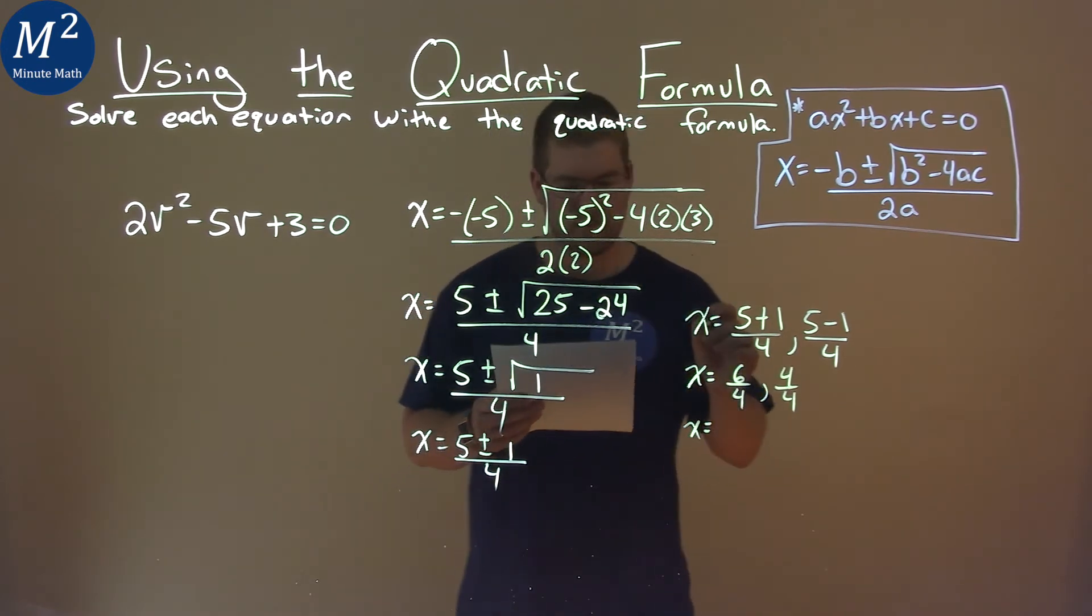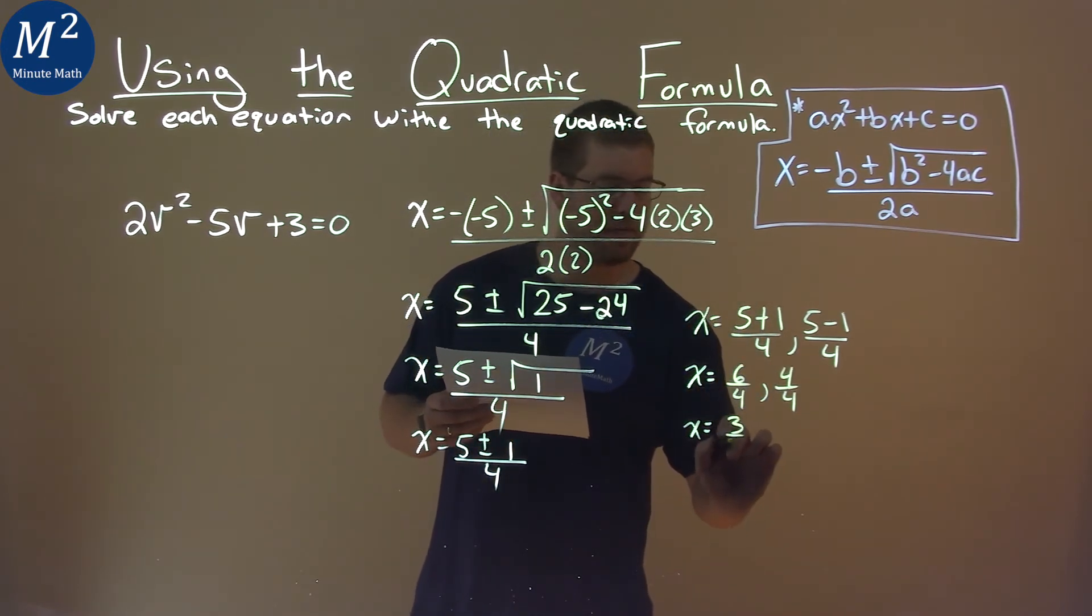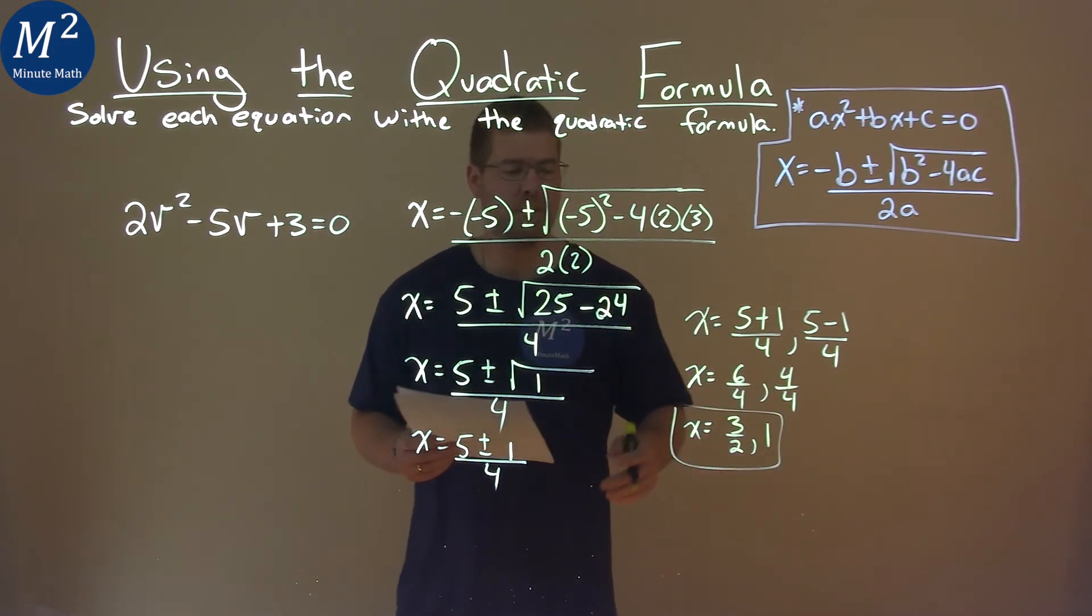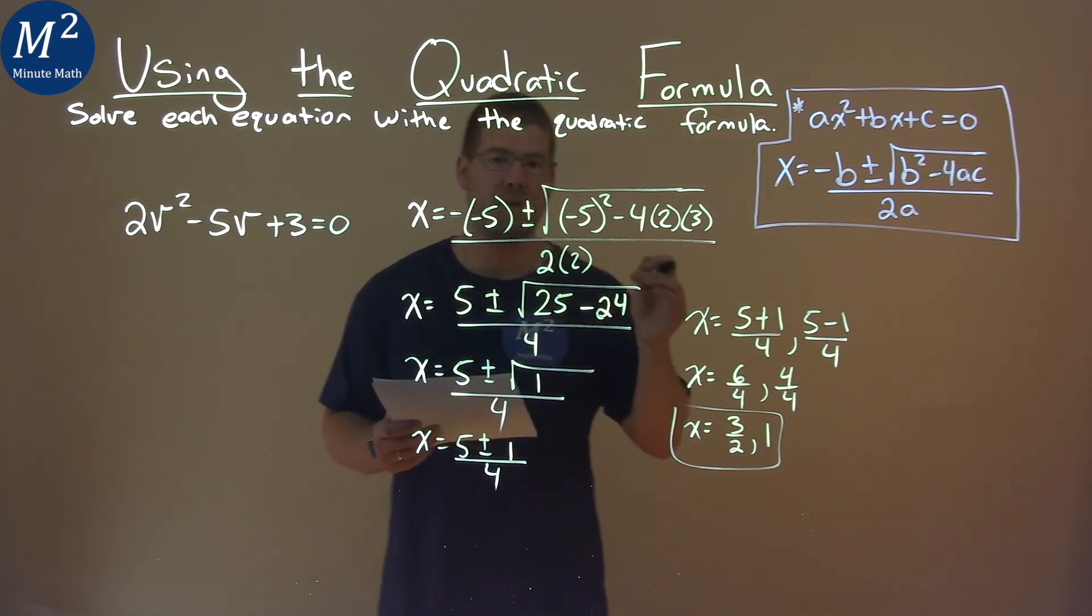Simplify it even more. 6 divided by 4 is 3 halves, and 4 divided by 4 is 1. And so my final answer here is x equals 3 halves and 1.